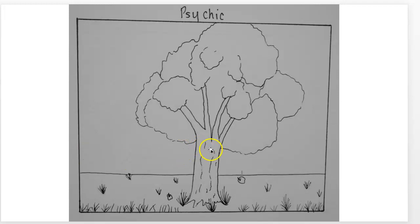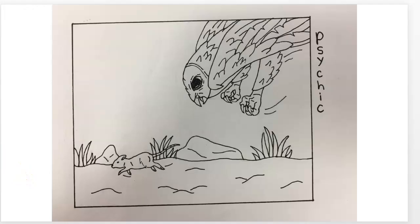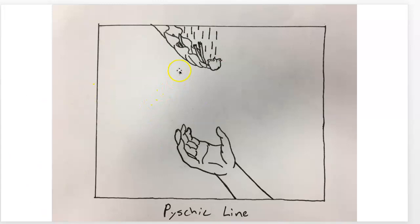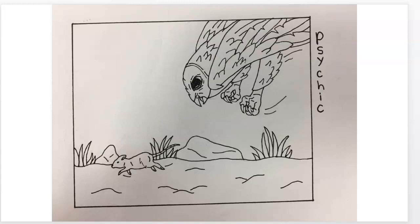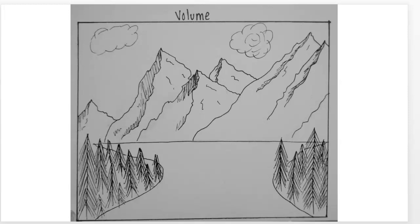Psychic line: it's a mental connection between two things — no actual line or intermittent points. It usually occurs when something looks or points in a direction. One example shows the psychic line between a falling apple and a tree. A really good version shows an owl clearly looking at catching a mouse — strong psychic line. Another nice one shows a hand about to catch a falling figure — a sense of motion and connection between the two.